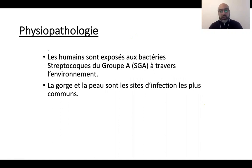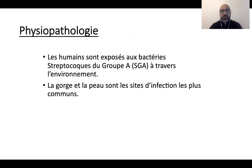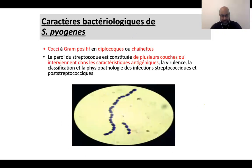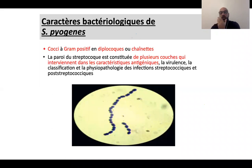Ce streptocoque bêta-hémolytique du groupe A se trouve dans l'environnement, et la gorge est le site le plus commun. Si on fait des prélèvements de gorge dans cette salle, on trouverait ce streptocoque chez au moins 20 à 30% d'entre nous. Le RAA va se développer deux à trois semaines après l'infection, c'est une réaction immunitaire retardée. Les lésions vont impliquer surtout les organes qui ont les mêmes épitopes, car les immunoglobulines fabriquées par le corps vont former une plaque d'athérosclérose dans le tissu sous-intimal.